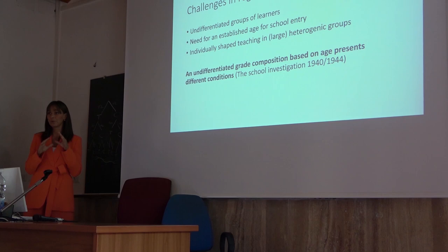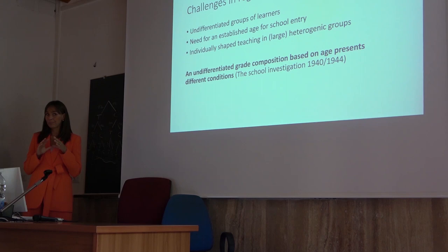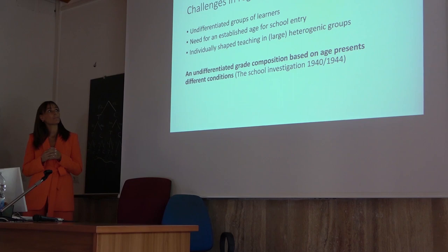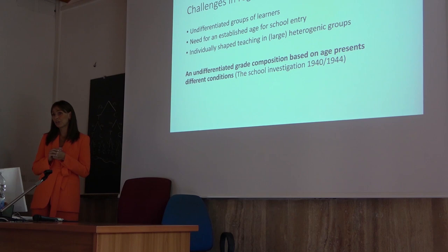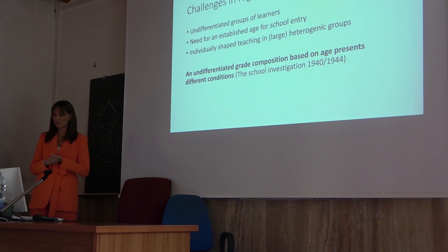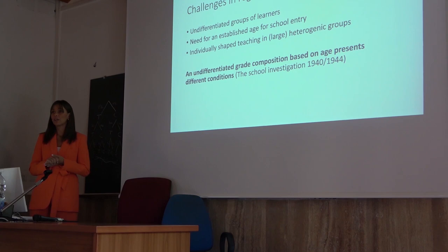There were different entry ages in the different school forms existing prior to this. Now all kids had to be put in the same school with no sorting or differentiation supposed to happen at the beginning — that was the key point, that there would be late differentiation because everybody should have the same possibilities. So to find a neutral ground to sort groups of learners, age became the only sorting aspect. There was also a need for individually shaped teaching in these large heterogeneous groups.